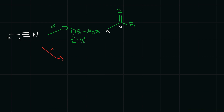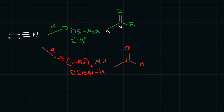To create an aldehyde from a nitrile, we use diisobutylaluminum hydride (DIBAL-H). This creates an aldehyde from the nitrile, with our carbons A and B present in the product. So that's what we can do with a nitrile — it's pretty straightforward.